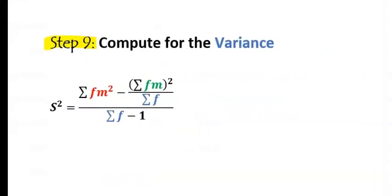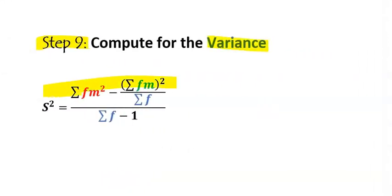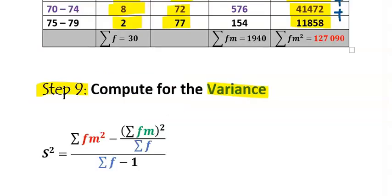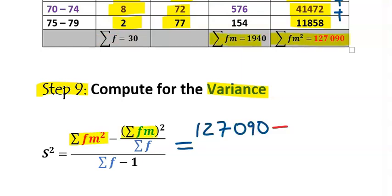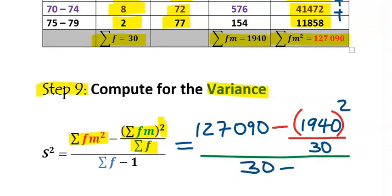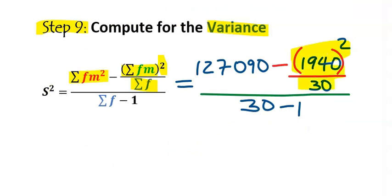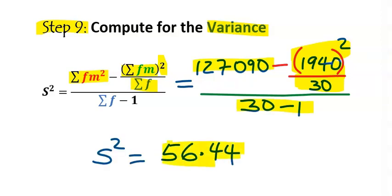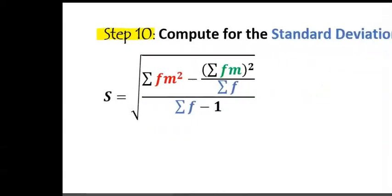Step nine: compute the variance using the formula. We need the column totals: the summation of fm² is 127,090, and the summation of fm is 1940 (which is then squared). Everything is divided by n(n−1), where n = 30. Compute the numerator first, then divide by 29. The variance is 56.44.